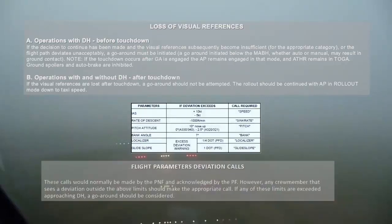Flight Parameters Deviation Calls: these calls would normally be made by the pilot non-flying and acknowledged by the pilot flying. However, any crew member that sees a deviation outside the above limits should make the appropriate call. If any of these limits are exceeded approaching Decision Height, a go-around should be considered.